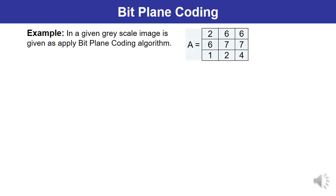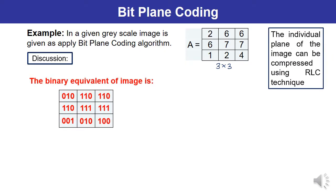Let us understand bit plane coding with an example. In this example, a grayscale image is given and you have to apply bit plane coding. This grayscale image is denoted by A and its size is 3×3. The first and foremost step is write down the binary equivalent of this image. Binary equivalent of 2 is 010, binary equivalent of 6 is 110. So the resultant image A and its binary equivalent is written in this particular form.